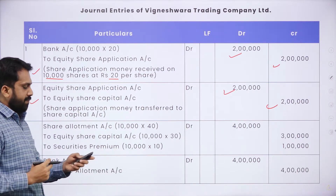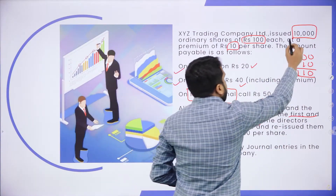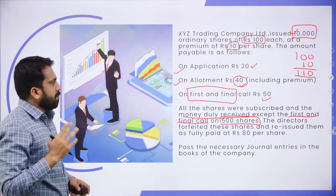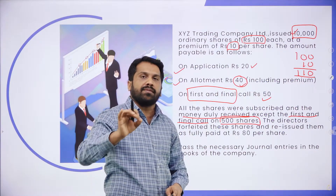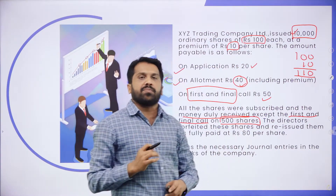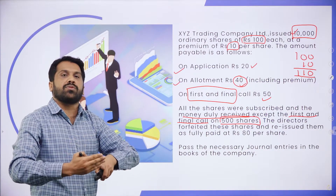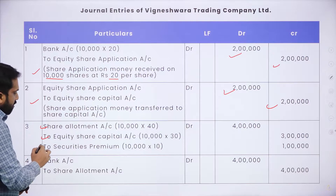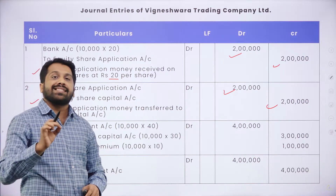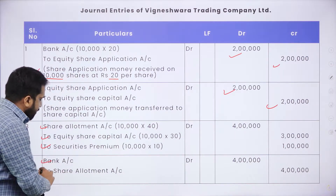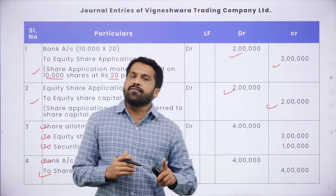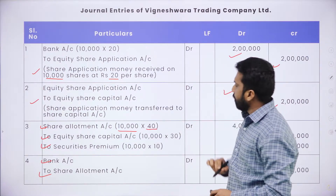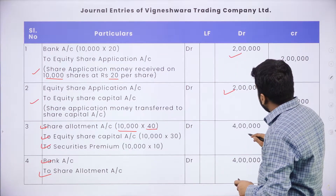Now we go for allotment. For allotment, we also have two journal entries. First: Share Allotment Dr. to Share Capital and Share Premium (also called Security Premium). Second: Bank Account Dr. to Share Allotment. Number of shares: 10,000 × ₹40 = ₹4,00,000.